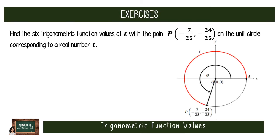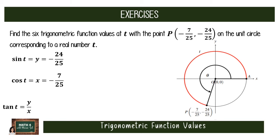Now we are ready to do some exercises. Find the six trigonometric function values at t, given the point (−7/25, −24/25) on the unit circle corresponding to a real number t. Since the point is given to be on the unit circle, we can apply our formulas directly. Sine of t equals the y-coordinate, which is −24/25. Cosine of t equals the x-coordinate, which is −7/25. Tangent of t equals y over x, so that is (−24/25) ÷ (−7/25), which simplifies to 24/7.